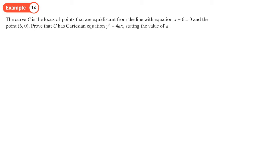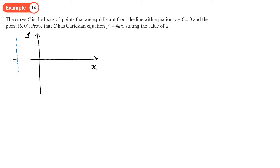Here we've got a curve C which is the locus of points equidistant from the line x plus 6 equals zero and the point (6, 0). We need to prove that C has Cartesian equation y squared equals 4ax. Let's do a sketch with the y-axis, x-axis, the line x plus 6 equals zero, and the point (6, 0). The locus of those points is going to be a parabola.